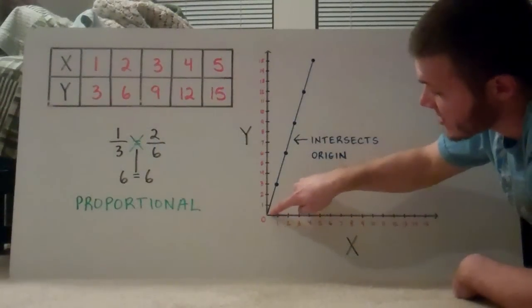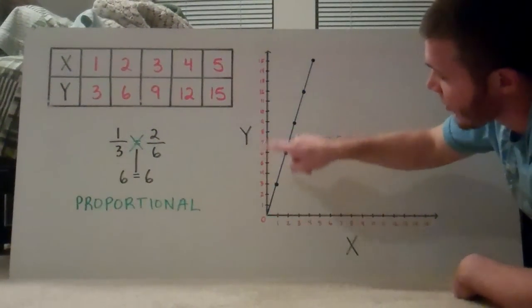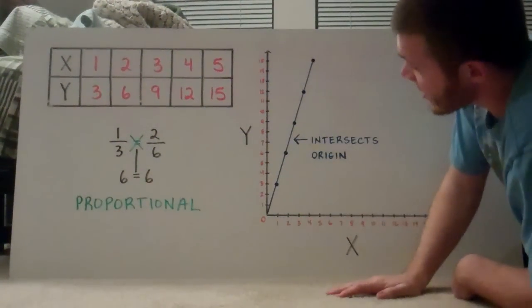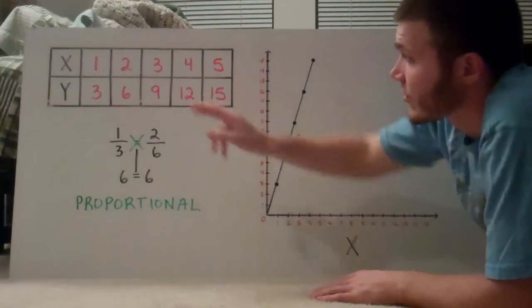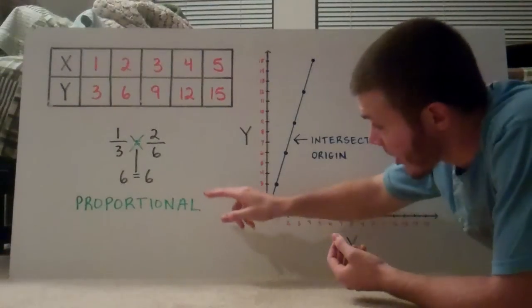It intersects, it crosses that 0,0 mark, where Y is 0 and X is 0. When values in a table do that, they are proportional.